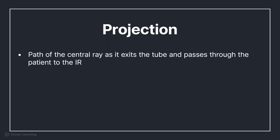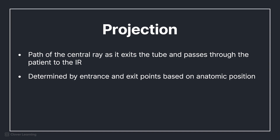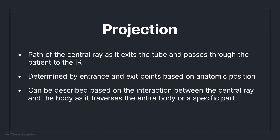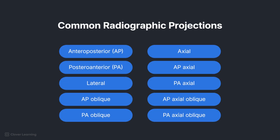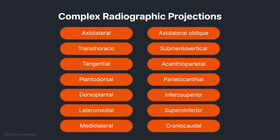In summary, radiographic exams are typically labeled based on their projection. The projection is defined as the path of the central ray as it exits the tube and passes through the patient into the IR. The majority of projections are determined by entrance and exit points based on anatomic position. Common radiographic projections include AP, PA, lateral, AP oblique, PA oblique, axial, AP axial, PA axial, AP axial oblique, and PA axial oblique. Complex projections, such as the tangential, submentovertical, and parietoacanthial, among others, are used for specific body parts and should be well known and understood by the technologist for accurate positioning.